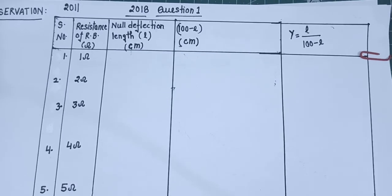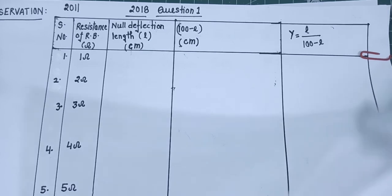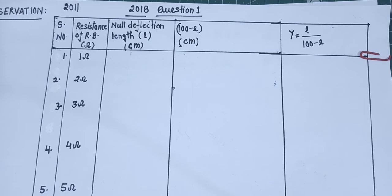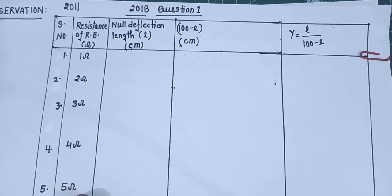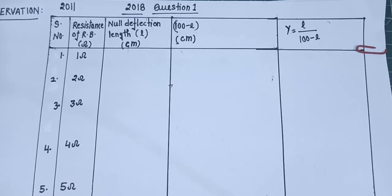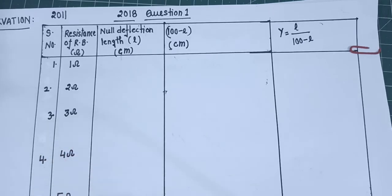This is the proper way to represent your observation table. First column for serial number, then the resistance box in ohms, then whatever null deflection length you are getting from the experiment in centimeters, then show your calculation of (100 minus L), and then calculate Y = L upon (100 minus L). There is no unit because length and length have the same unit in numerator and denominator. I am dividing this experiment into two videos — in this first video I showed you the 2018 and 2011 question papers, discussed the analysis, and explained the observation table.